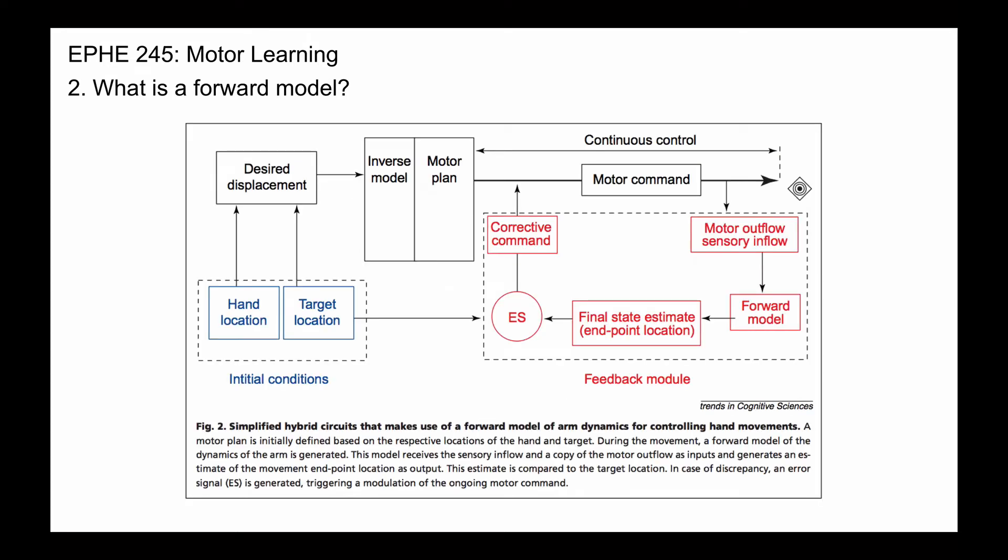This is pretty complicated, but it's an overview of how people move. Essentially, the hand and target location are used to compute a desired displacement. The inverse model takes that displacement and uses it to come up with a motor command.